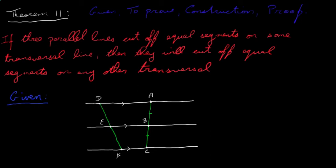In this video I'm going to have a look at Theorem 11 and prove it under these headings: given, to prove, construction, and proof. Theorem 11 basically says that if three parallel lines cut off equal segments on some transversal line, then they will cut off equal segments on any other transversal line.